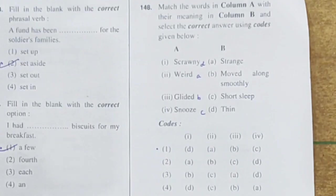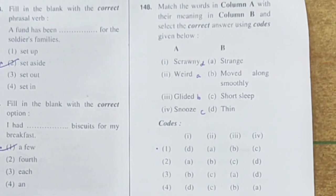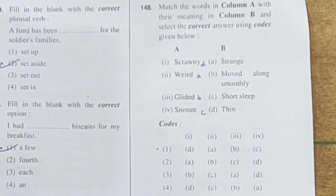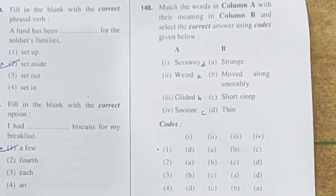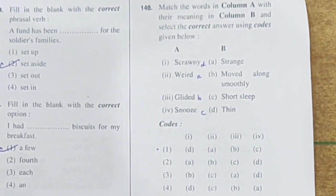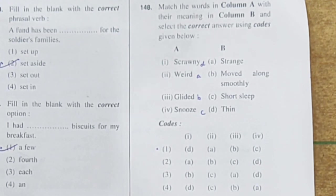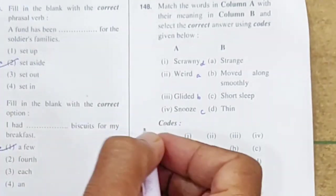Question 148: Match the words in column A with their meanings in column B. Scrawny means thin (D). Weird means strange (A). Glided means moved along smoothly (B). Snooze means a short sleep (C). So the sequence is D, A, B, C — which is found in option 1. Option 1 is correct.